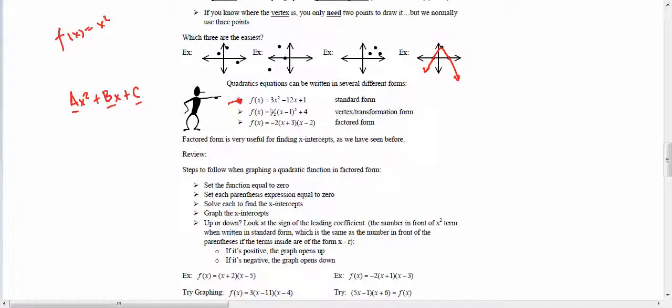Still pointing in the upward direction because that's positive. And then the last one is factored form. Now factored form is also very useful. The number out in front does the same exact thing as the number out in front here.